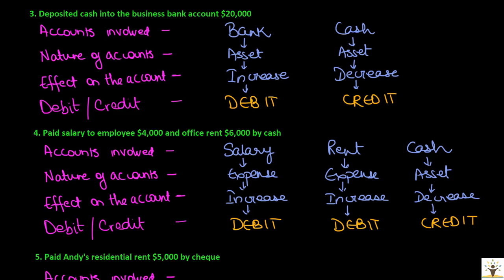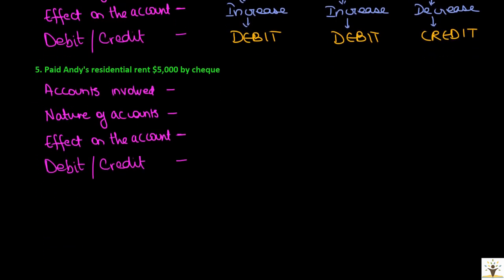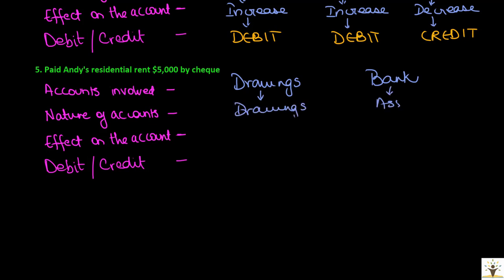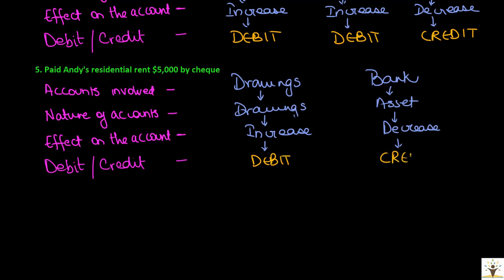Fifth transaction: paid Andy's residential rent $5,000 by cheque. We cannot use a rent account because this is not business rent — it is the owner's personal rent. When personal expenses of the owner are paid, we use a drawings account. And since it is paid by cheque, the amount goes from the bank account. Drawings is increasing in this transaction and the bank balance is decreasing. When personal expenses of the owner are paid using business resources, drawings is always debited. And since bank as an asset is decreasing, it will be credited.